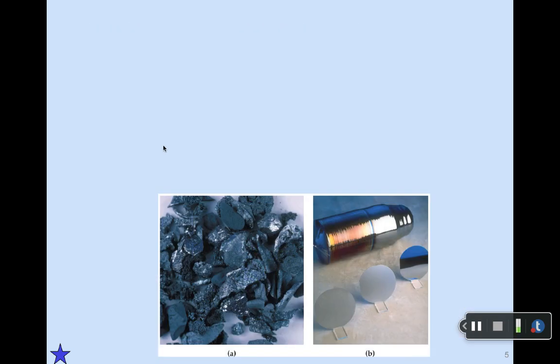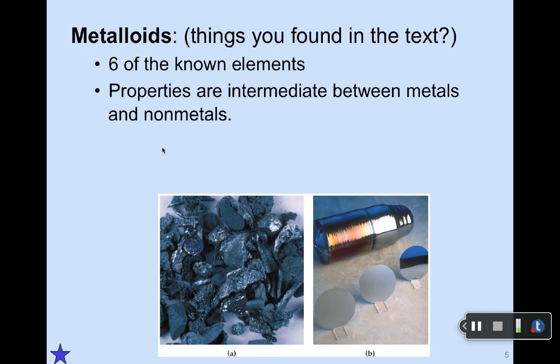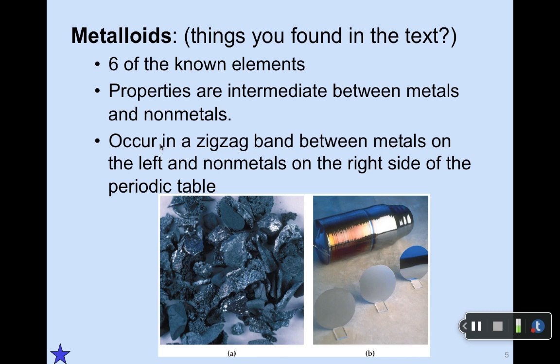The third set of elemental categories, you can guess by now, would be the metalloids. There are only a few of them — six are known as metalloids. Their properties are somewhere between metals and non-metals, and therefore not especially easy to describe. They occur in that zig-zag band between the metals on the left and the non-metals on the right side of the periodic table. The two shown in this diagram are boron and silicon — silicon used in semiconductors, as you might guess.